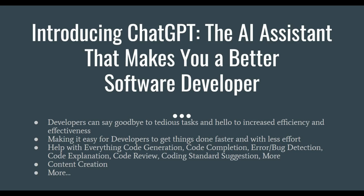It will help in different areas like code generation, code completion, error or bug detection, debugging code, code explanation, code review, coding standard suggestions, and more. You are even able to use it for content creation or technical content creation. Today I am going to talk specifically about how this AI technical revolution will make you a better software developer if you utilize it in the proper way.